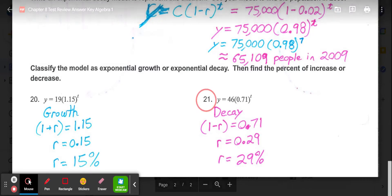Then in 21, we have 0.71. So it's less than 1, meaning it's decay. So what we want to do in this case is take 1 minus the 0.71, giving us 0.29. And then in that case, multiply that by 100, meaning our decay rate is 29%.